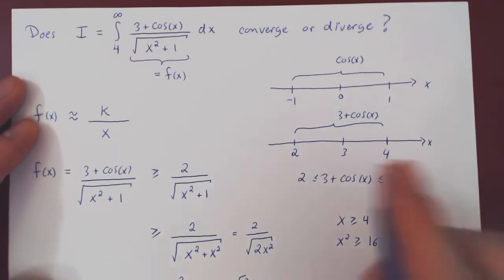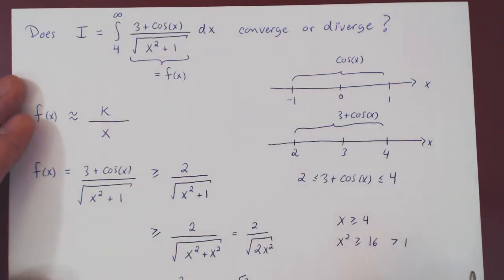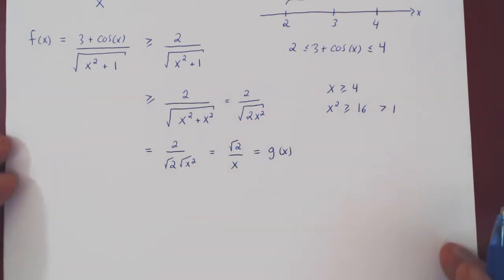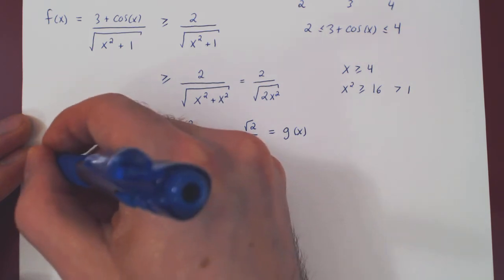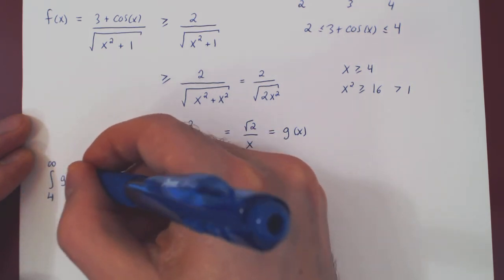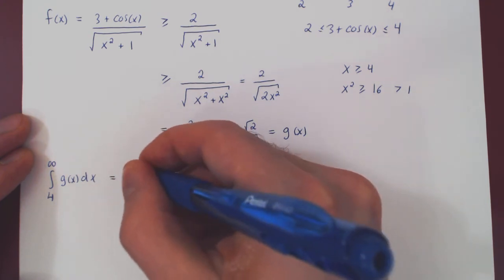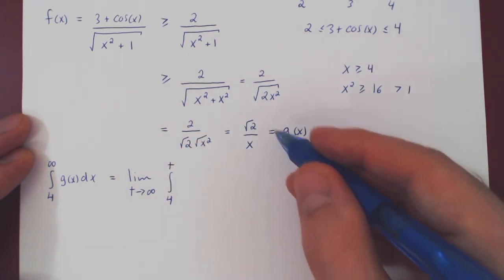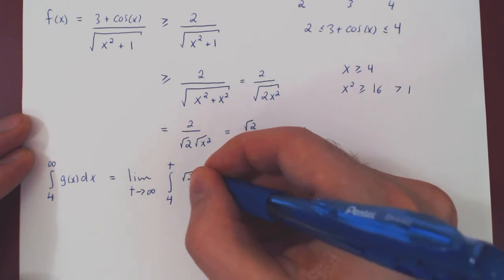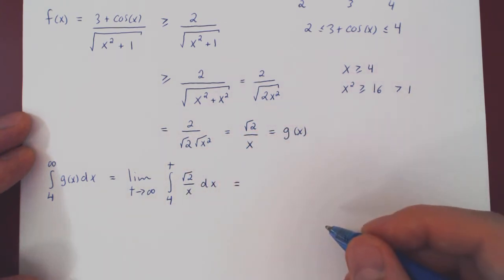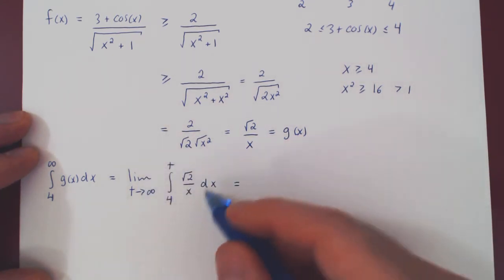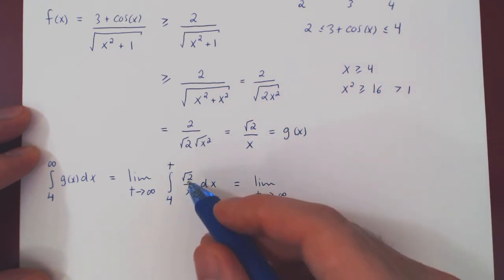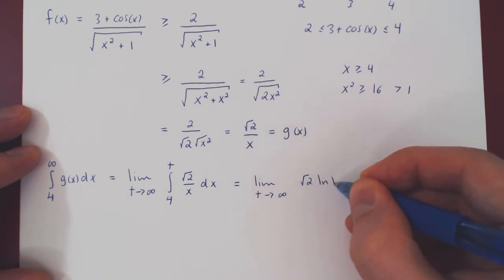So let's now ignore the integral of f from 4 to infinity in the favor of the much simpler function, √2/x, and we'll integrate this from 4 to infinity. g(x) is the root of 2 over x. And we have on our hands a rather simple integral.